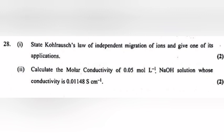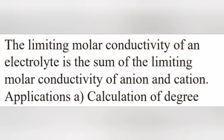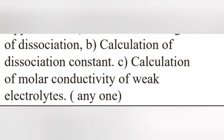Question 28, Part 1: State Kohlrausch law of independent migration of ions and give one of its application. Answer: Limiting molar conductivity of an electrolyte is a sum of limiting molar conductivity of anion and cation. Applications: A) Calculation of degree of dissociation. B) Calculation of dissociation constant. C) Calculation of molar conductivity of weak electrolytes. Write any one.